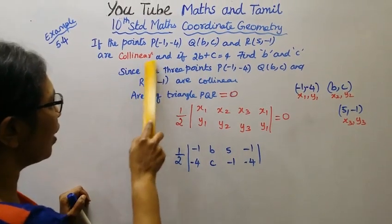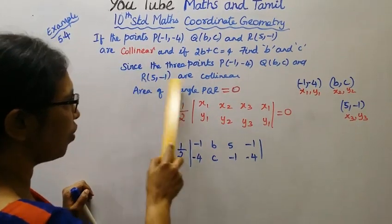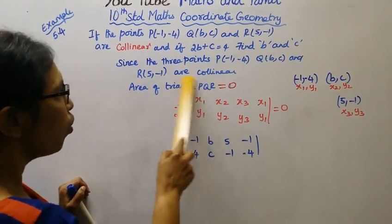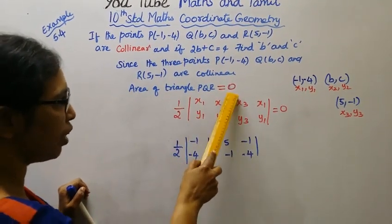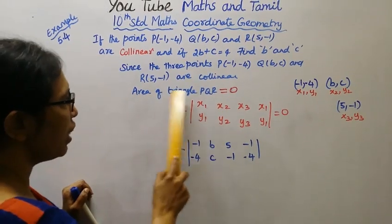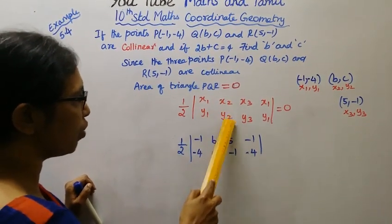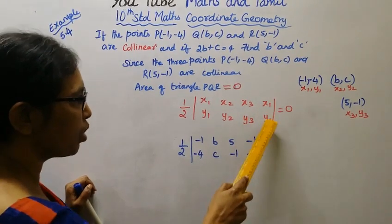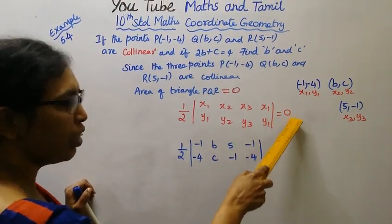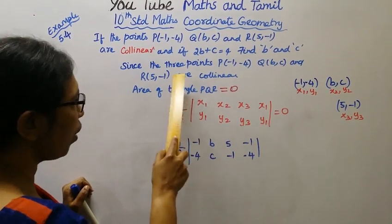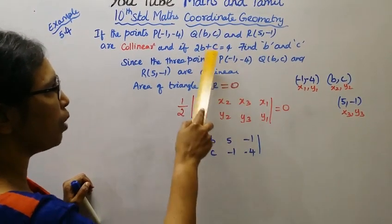Since the three points P, Q, and R are collinear, the area of triangle PQR is equal to zero. The area of a triangle formula is one-half times the determinant expression with coordinates x1, y1, x2, y2, x3, y3, and it equals zero because the points are collinear.